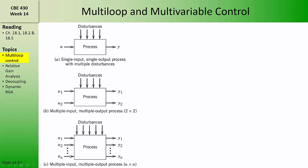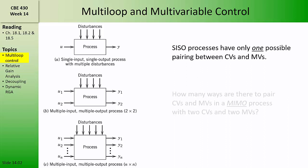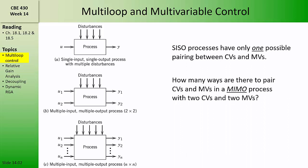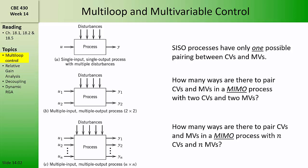While single input, single output processes have only one possible pairing between controlled variables and manipulated variables, MIMO processes can have many pairings. How many ways are there to pair controlled variables and manipulated variables in a MIMO process with n controlled variables and n manipulated variables? The number is n factorial.